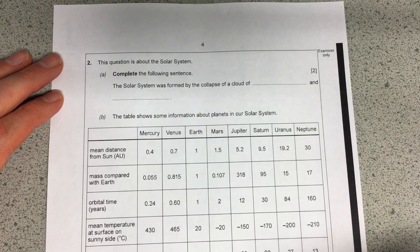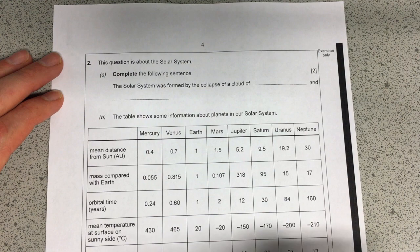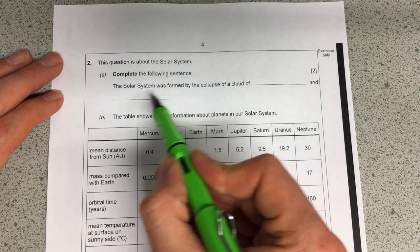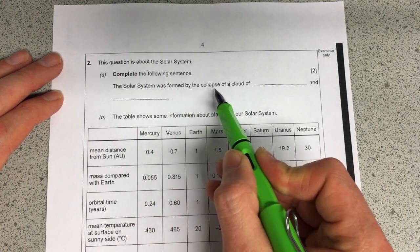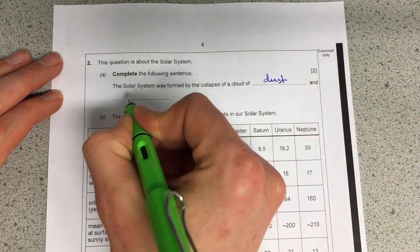This question is from the Double Award Unit 6 Foundation Tier paper from 2018. It's a data analysis and a little bit of recall within this question. The first thing they want us to do is remember that the solar system was formed by the collapsing of a cloud of dust and gas.